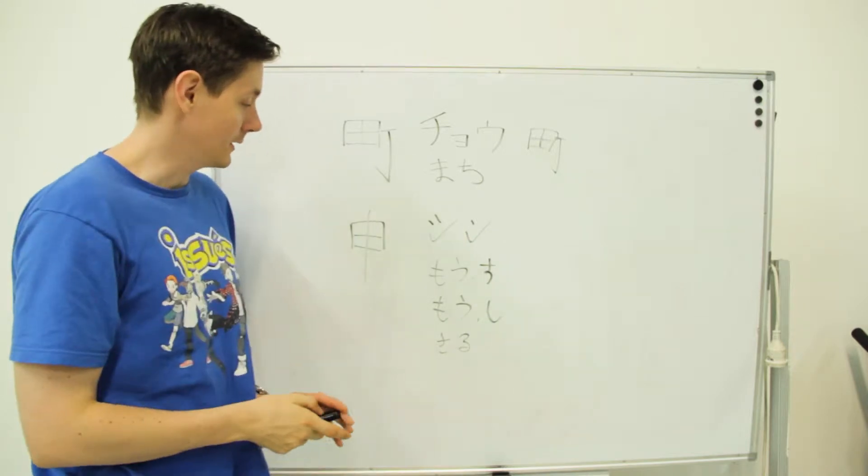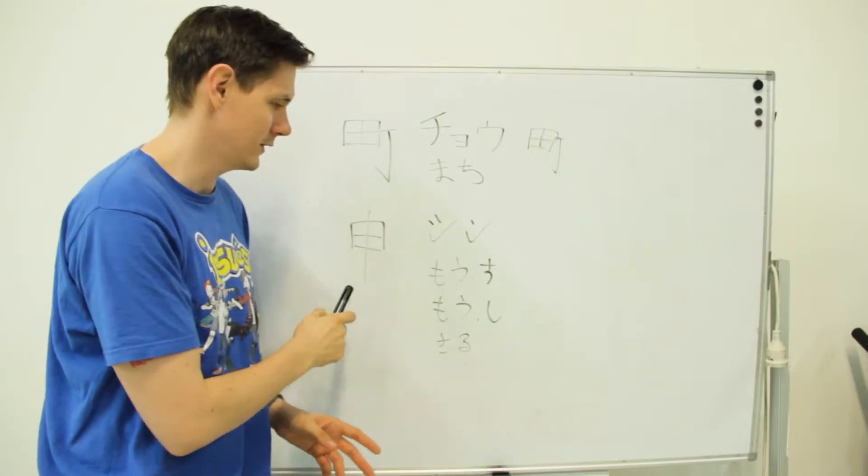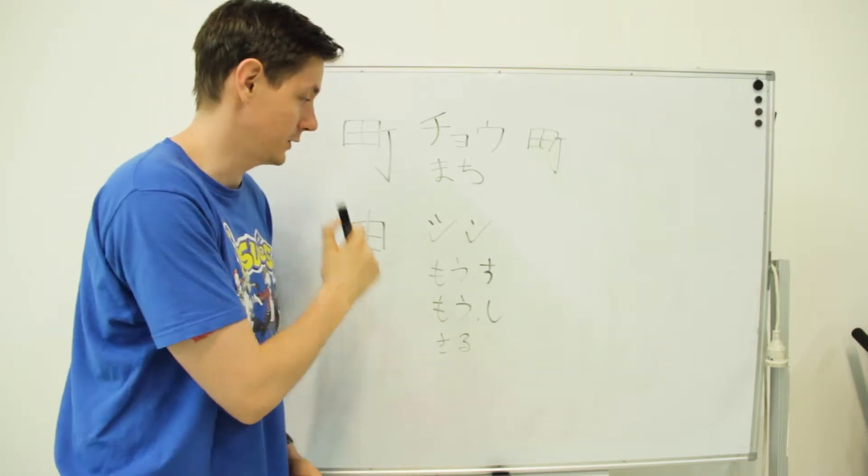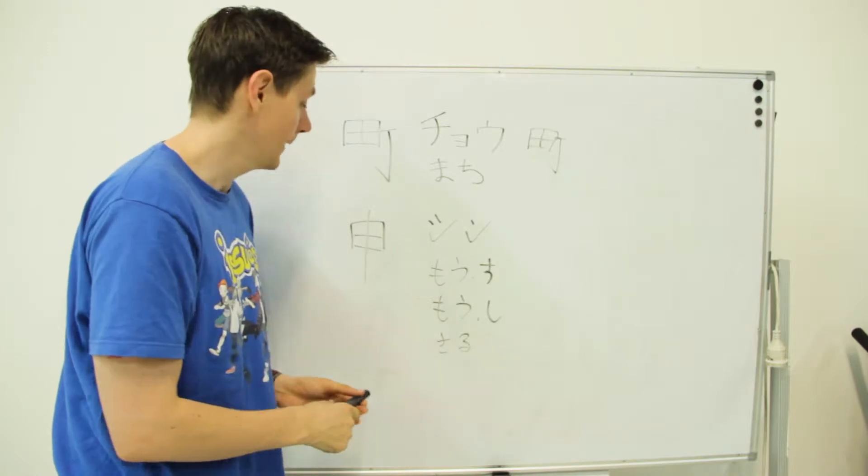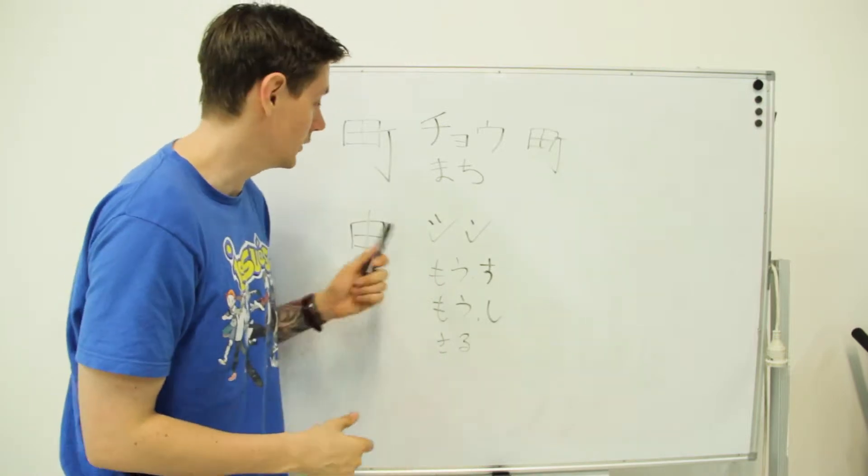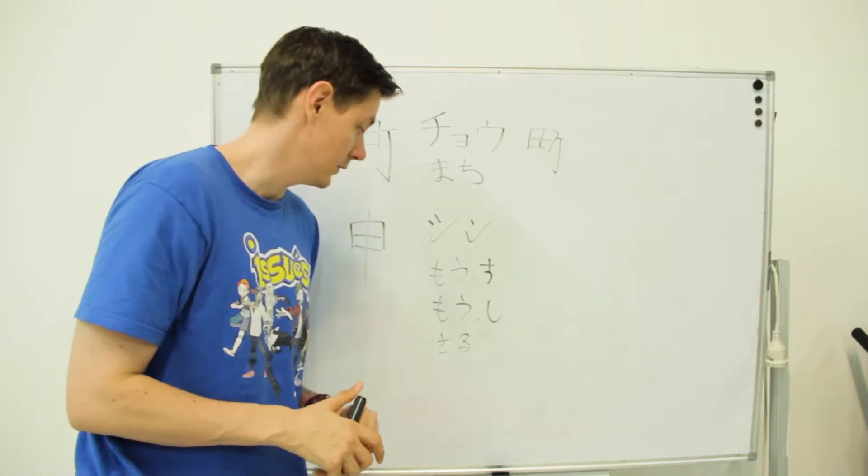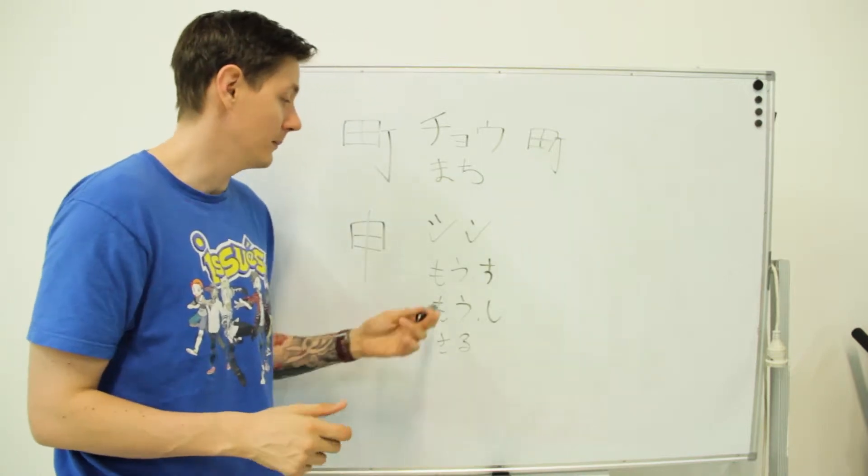The next kanji means to humbly say, also represents the Chinese zodiac character for monkey. This is not the kanji for monkey though in the traditional sense. Japanese people have a different kanji for monkey, but Saru is monkey. The onyomi reading is shin and the kunyomi reading is the mo from mousu or moushi. It's humbly to say.